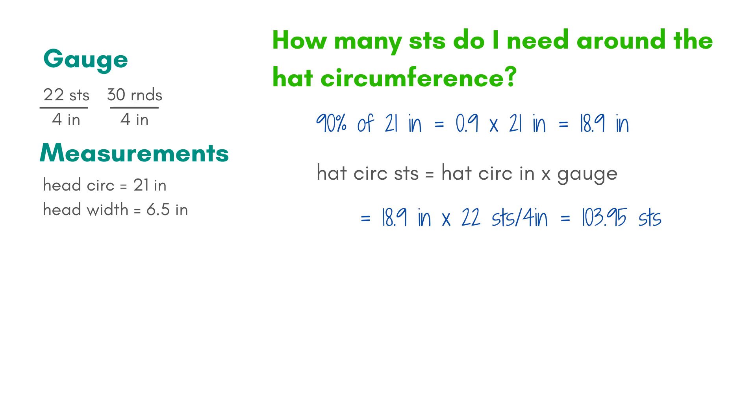Hat circumference in stitches equals the hat circumference in inches times the gauge. I'll plug in my numbers and my hat circumference in stitches equals 18.9 inches times 22 stitches per 4 inches, which equals 103.95 stitches.